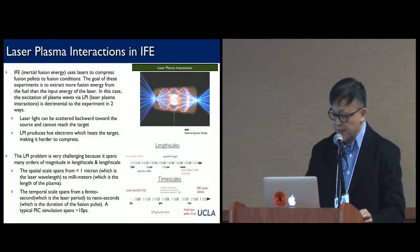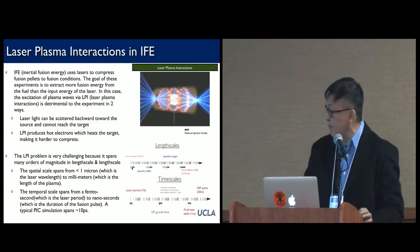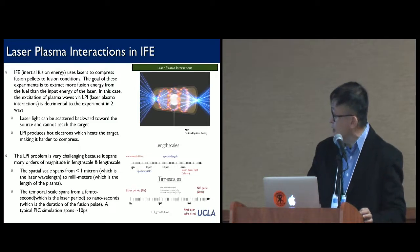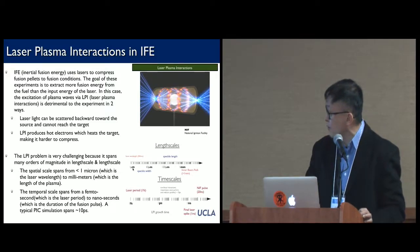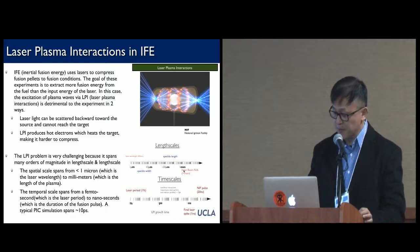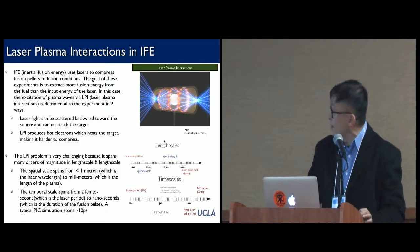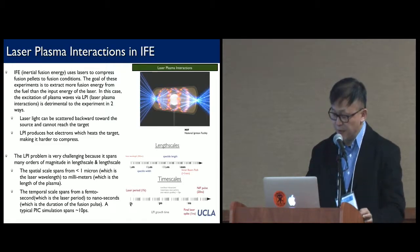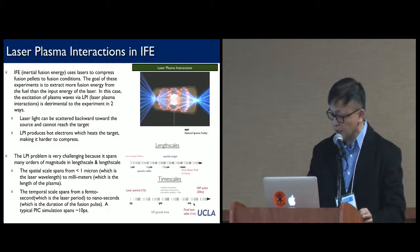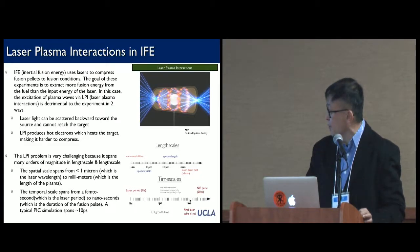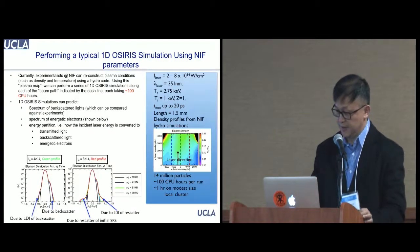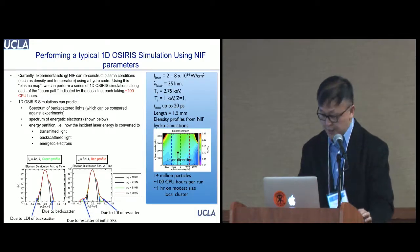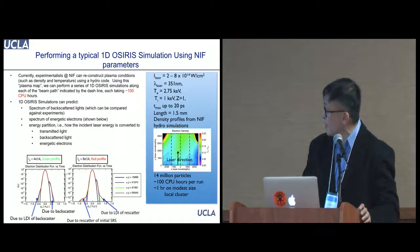This is a very difficult problem because the length and time scales involved are very large. The length scale spans about three orders of magnitude — from one micron, which is the wavelength of the laser, to one millimeter, which is roughly the length of the beam path. The time scale spans from one femtosecond, roughly the period of the laser, to a nanosecond, which is the duration of the pulse.